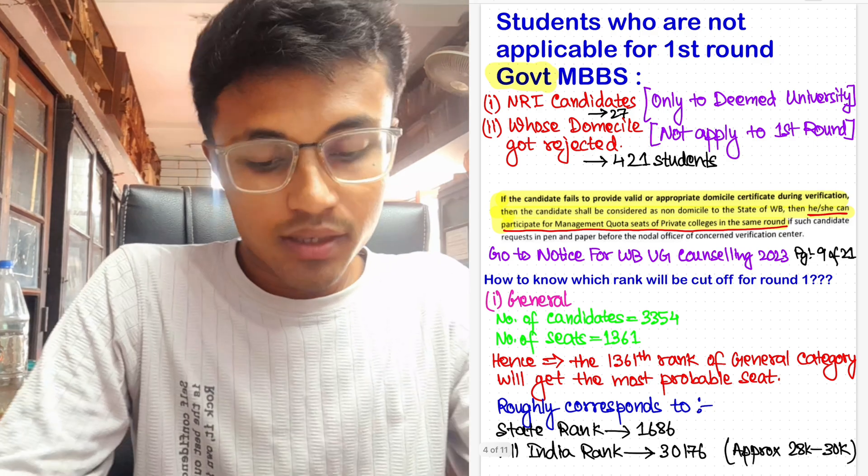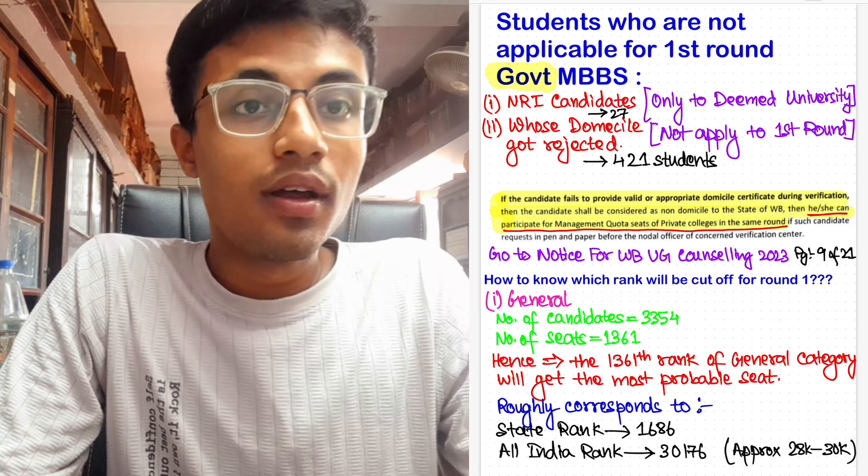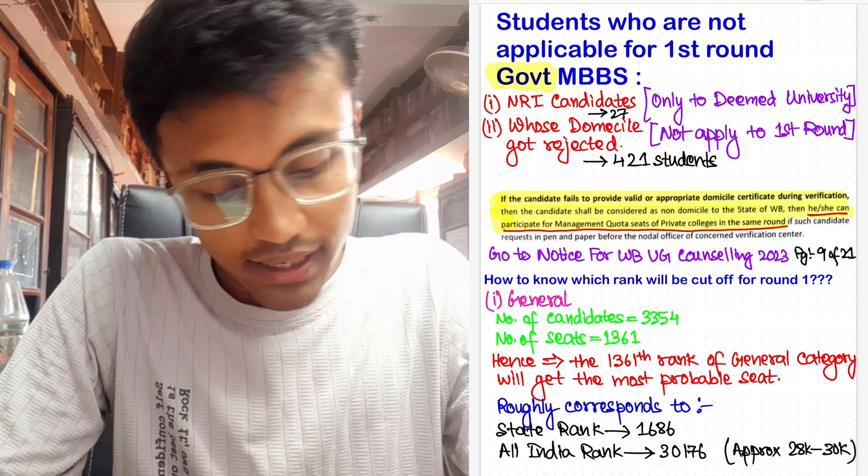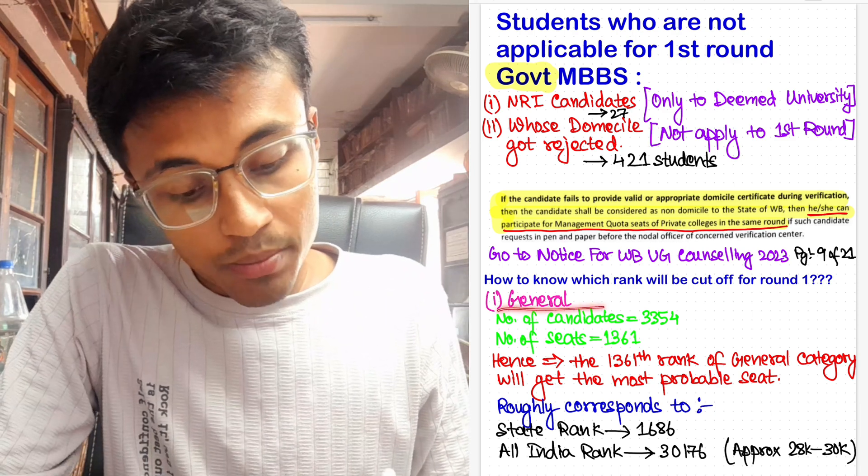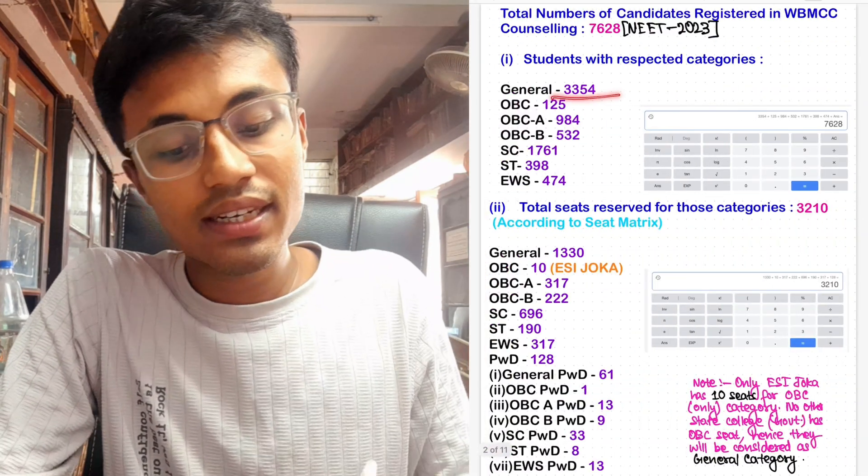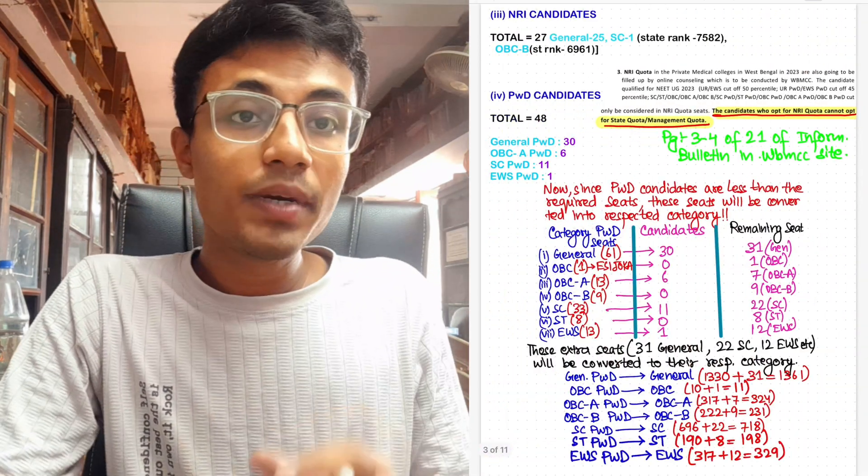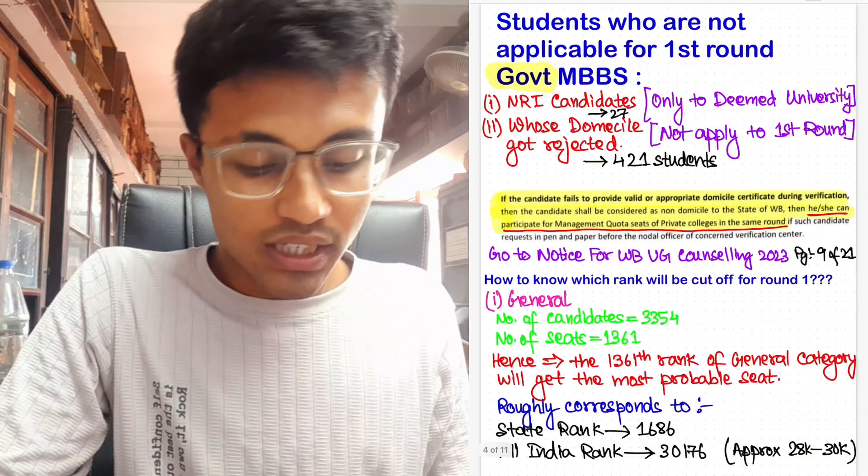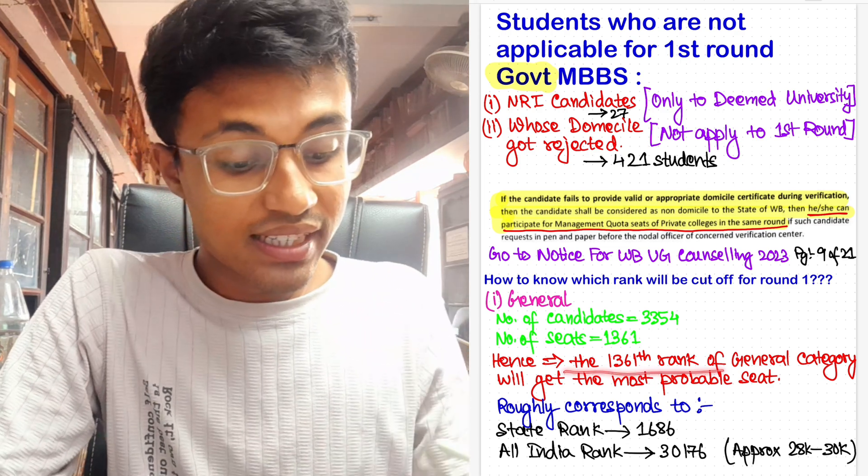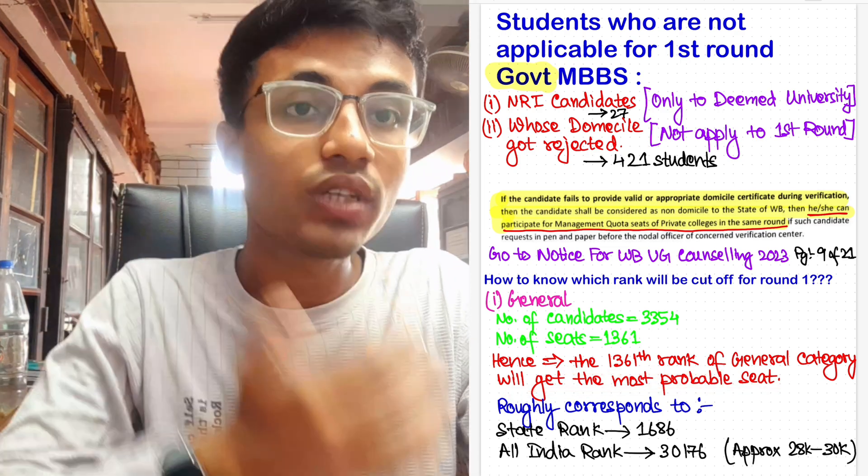Now the main part of this video: how to know which rank will be cutoff for round 1. Let me tell you at the very start, this is an estimated cutoff. It can vary to a certain degree. For general, the number of candidates as I said which participated in this year's counseling is 3,354, and the number of seats as we calculated considering the PWD categories which would come into general is 1,361. So technically we can say that the 1,361st rank of general category will get the most probable seat if we go into the serial order.